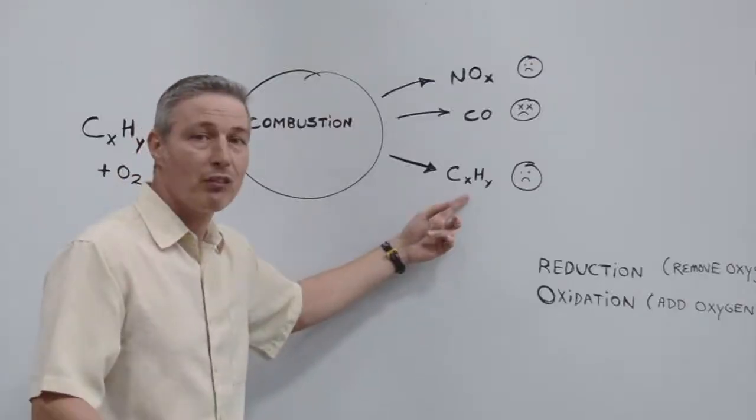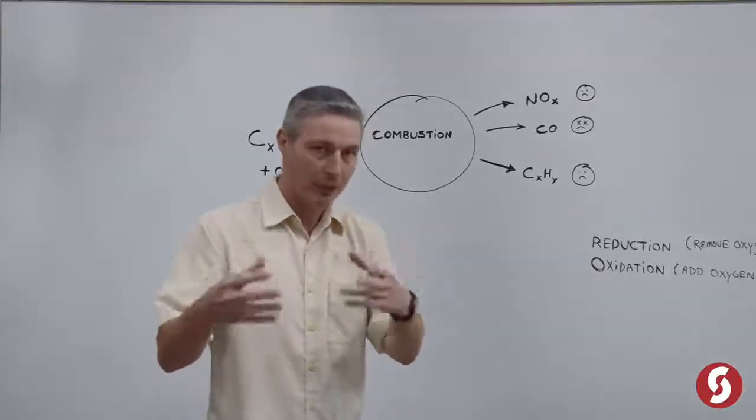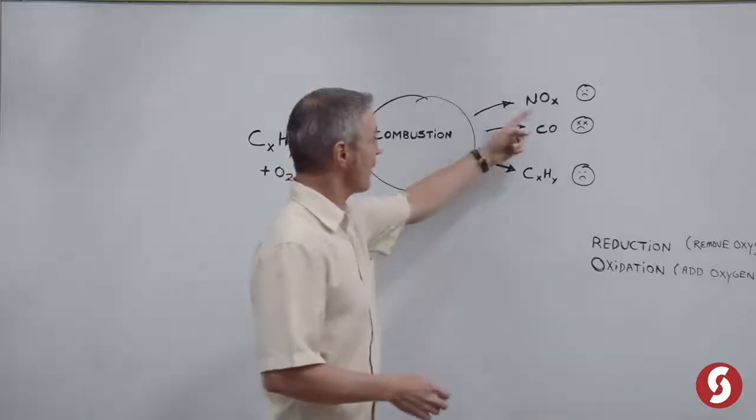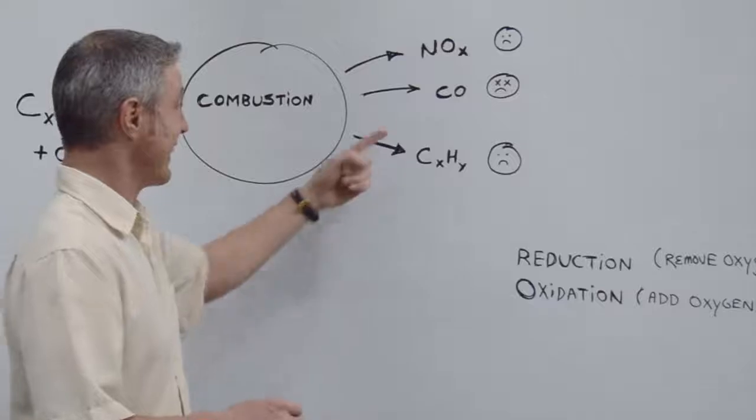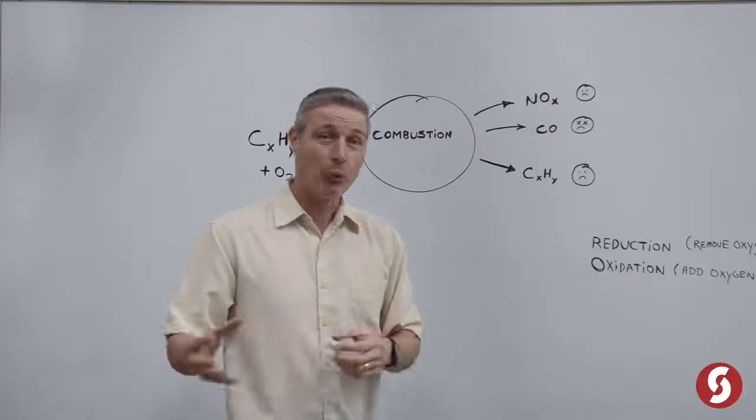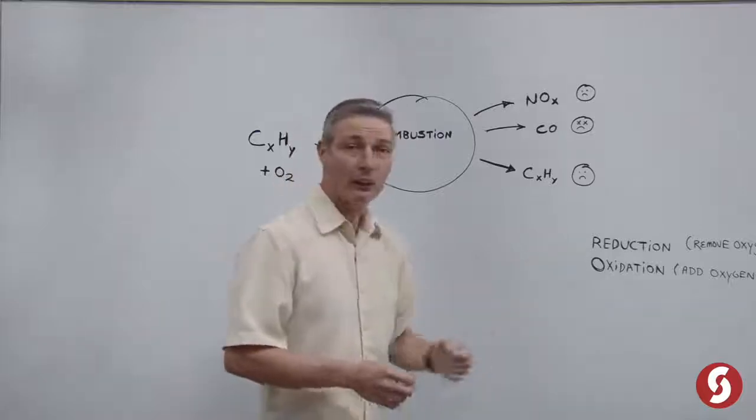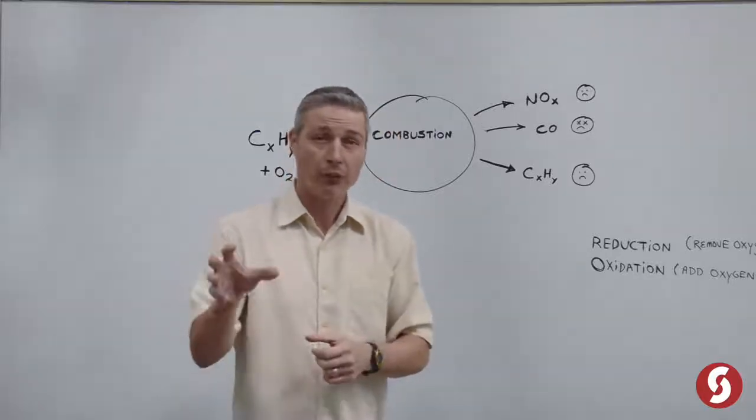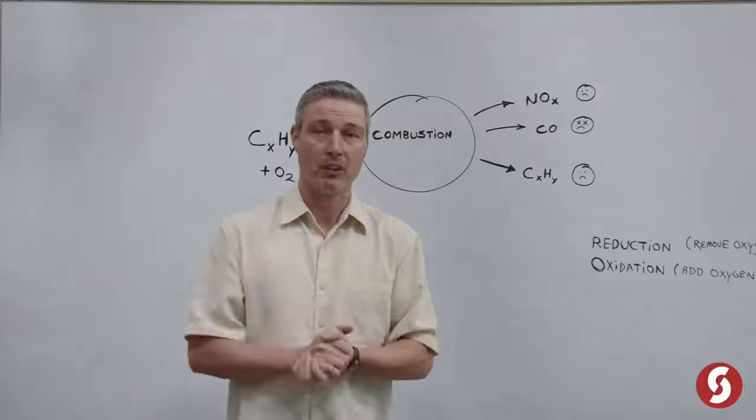Then there's just uncombusted fuel. We actually have two problems here, chemical problems. This needs to have the oxygen stripped off of it. That's called reduction. This and this need more oxygen slapped on it until CO2. That's called oxidation and both of those happen in a CAT converter and that's why there's two compartments in there.